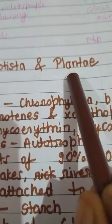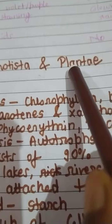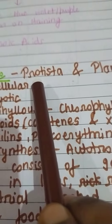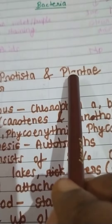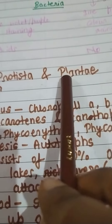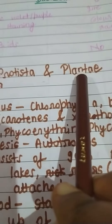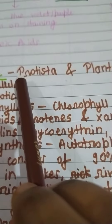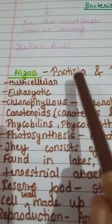Protista consists of algae and protozoa. All algae except the three I mentioned in Plantae — Charophyta, Rhodophyta, and Phaeophyta — along with protozoa, are present in kingdom Protista. Thank you.